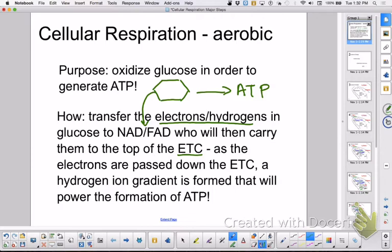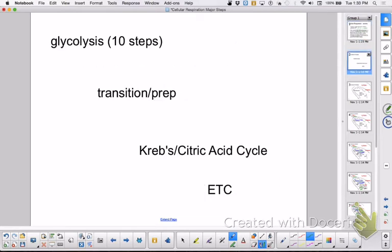When those electrons pass through the electron transport chain, a hydrogen ion gradient will be established. Remember, this will be a difference in charge, a difference in concentration, and a difference in pH. So when the hydrogen ions move back across the cristae of the mitochondria, you will be able to generate quite a bit of ATP.